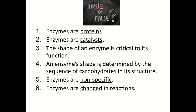Number one: enzymes are proteins — that's true. Number two: enzymes are catalysts — true, although it would be better to say biological catalyst. Number three: the shape of an enzyme is critical to its function — true; if the shape isn't correct it won't be able to bind the substrate. Number four: an enzyme's shape is determined by the sequence of carbohydrates in its structure — false; it's amino acids, not carbohydrates. Number five: enzymes are non-specific — false; enzymes are specific. Number six: enzymes are changed in reactions — false; they remain unchanged in reactions.